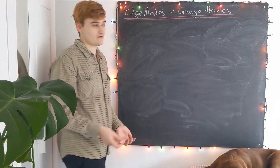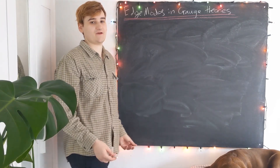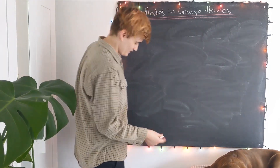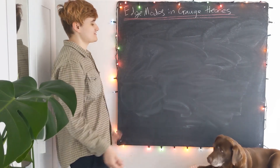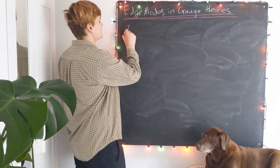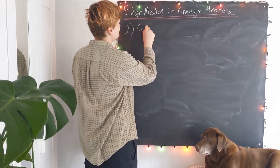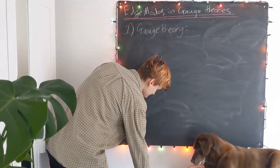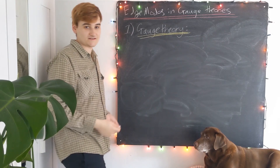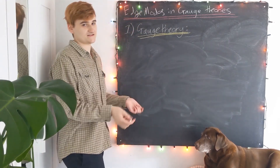This project looks at what extra effects are introduced when we have to deal with a boundary in a gauge theory. Well, this project consisted of a number of parts. The first was formulating gauge theories mathematically.